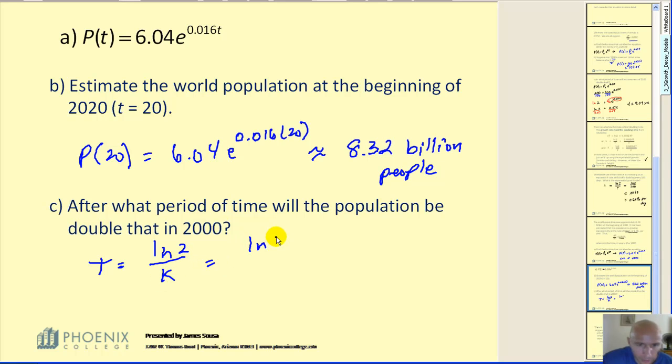So in this problem, natural log 2 divided by our growth rate, and that will come out to approximately 43.32 years.